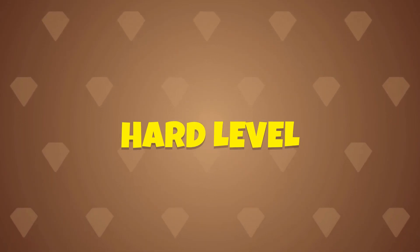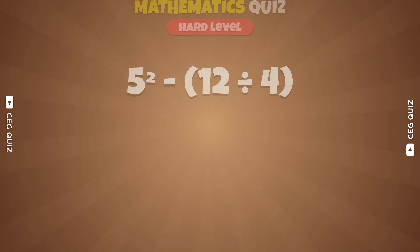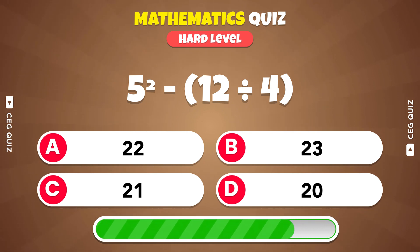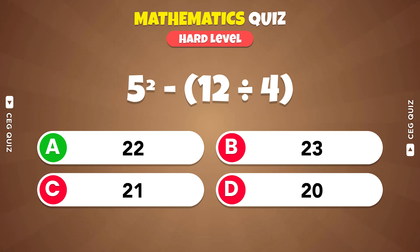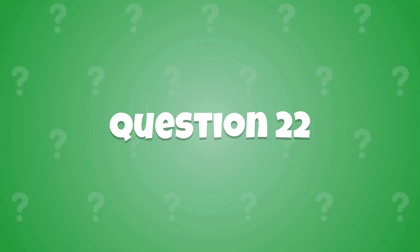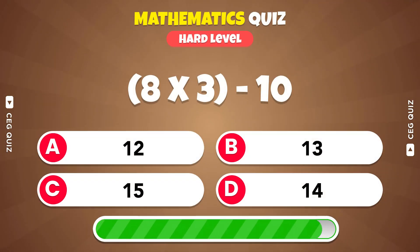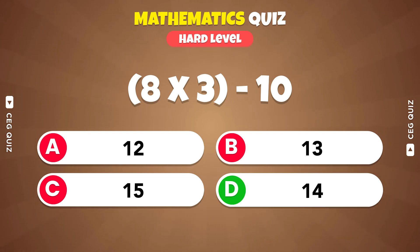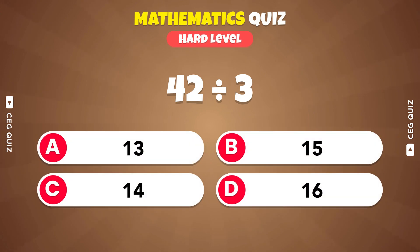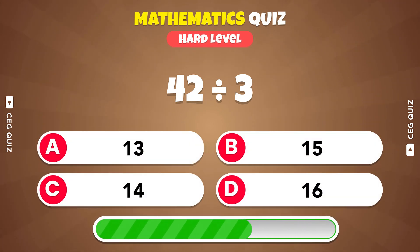Are you ready for the hard level? What is 5 squared minus 12 divided by 4? It's 22. How much is 8 times 3 minus 10? The correct answer is 14. What is 42 divided by 3? It's 14.